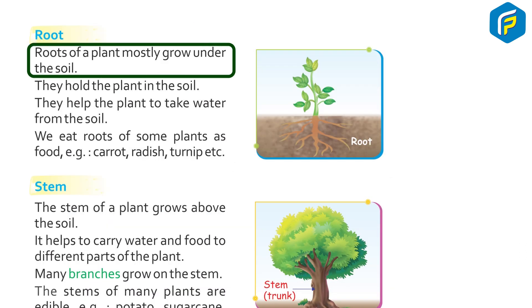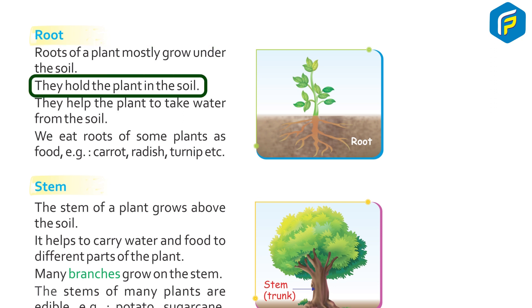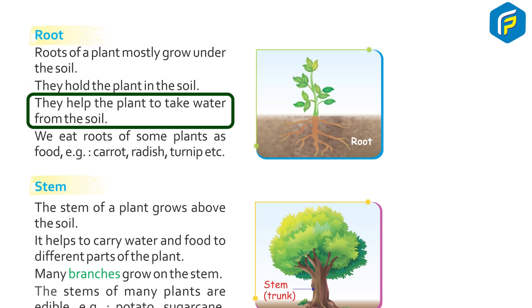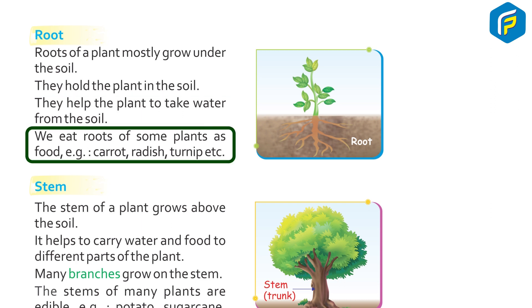Roots. Roots of a plant mostly grow under the soil. They hold the plant in the soil. They help the plant to take water from the soil. We eat roots of some plants as food, e.g. carrot, radish, turnip, etc.